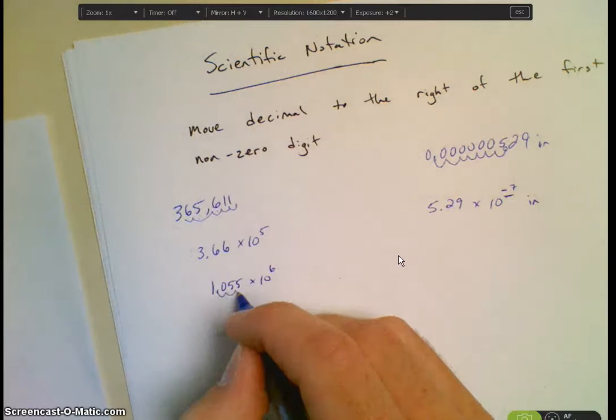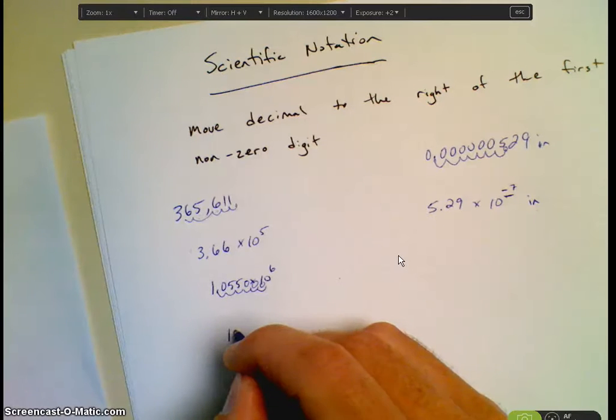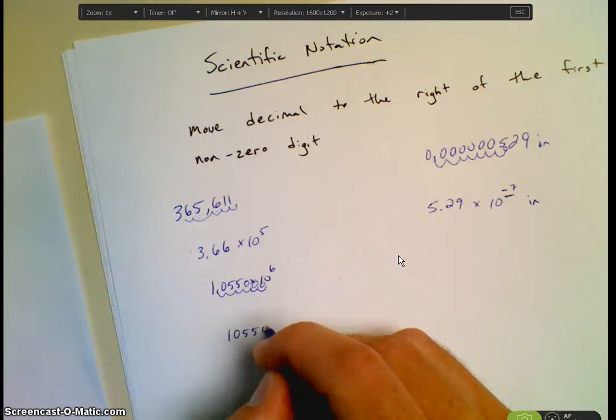So 1, 2, 3. And then I have to put in zeros. There's 4, 5, 6. So my number is going to be 1, 0, 5, 5, 0, 0, 0.